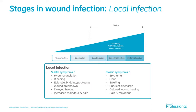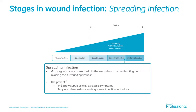If that's not managed, it's likely to lead on to spreading infection, where the microorganisms present within the wound bed start to really proliferate and invade the surrounding tissues beyond the localised area. The erythema starts to extend beyond the wound bed and wound edges, the patient becomes more aware of their wound infection, pain would be increasing, and it may also be starting to demonstrate early systemic infection signs — such as a raised temperature.